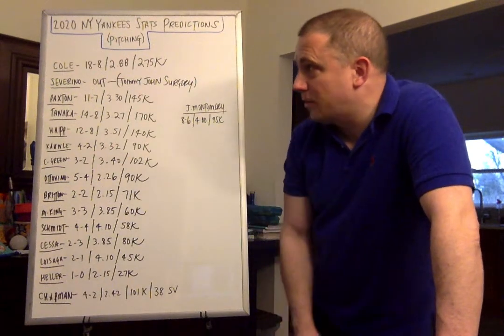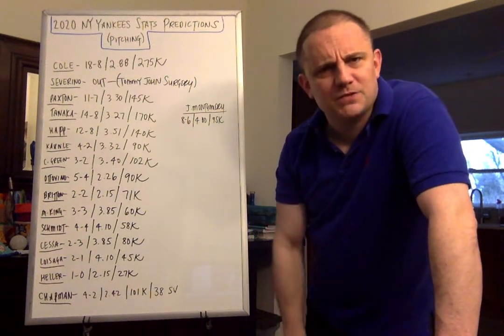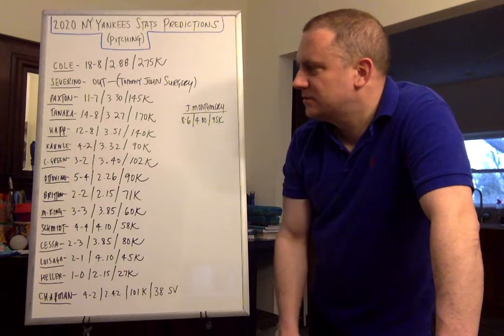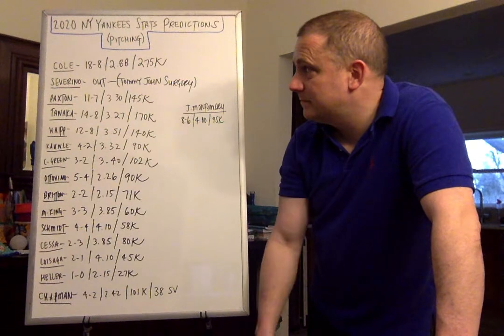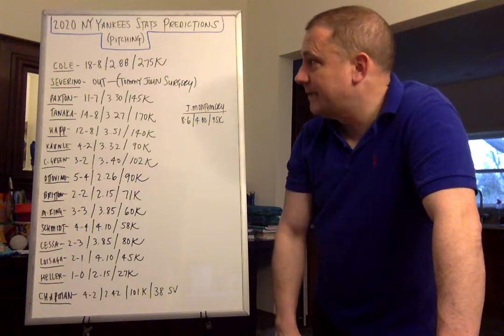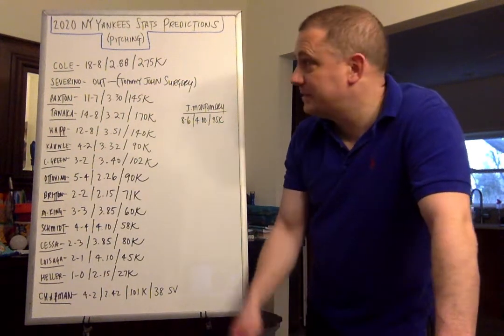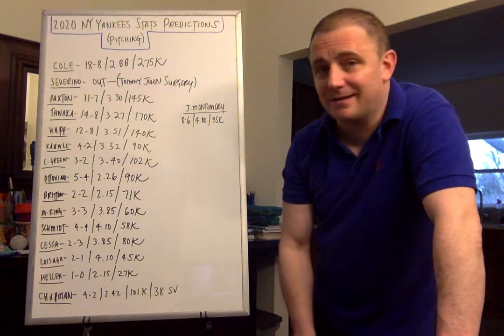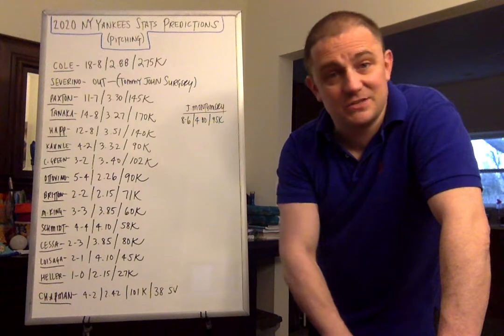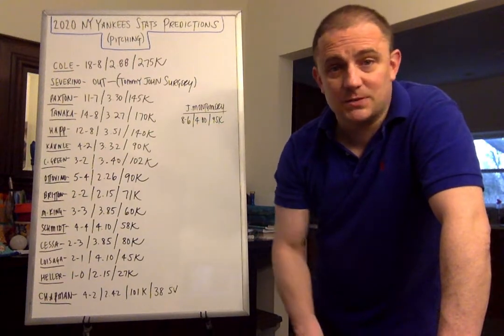And last but not least, our ace, Garrett Cole. I see him having a little bit of adjustment coming to the Yankees, but still, that said, I still see him having a dominant year. 18-8, about a 2.88 ERA, and about 275 strikeouts. So I would take that any day, any year, any month, any week. If he can give us a couple years like that, or four or five or six years like that, he'd be more than worth his contract.